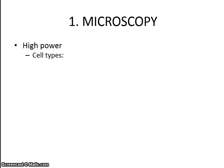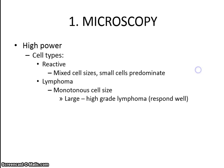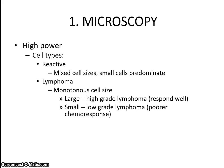Then moving on to high power, we want to focus on the cell types. In reactive proliferations, we will see mixed cell sizes with the small cells predominating. And in lymphomas, it's a more monotonous cell population — they will usually be of one cell type. If the large cells predominate — and we call them large when they are about the same size or larger than endothelial cells lining blood vessels — large cell predominant lymphomas are usually high-grade and they actually respond very well to chemotherapy. As opposed to small cell predominant lymphomas, which are usually of a lower grade and unfortunately don't respond so well to chemotherapy.